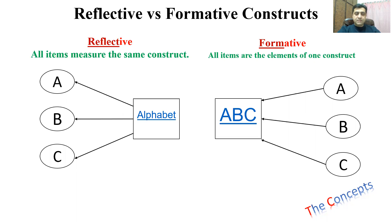Let's talk about constructs and items. You can see that 'alphabet' is a construct, and A, B, and C can be taken as the items through which it is being measured. This is the way we are measuring this construct. On the other hand, you can see A, B, and C — these are the items through which we are measuring this construct.